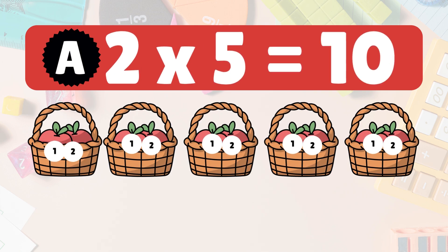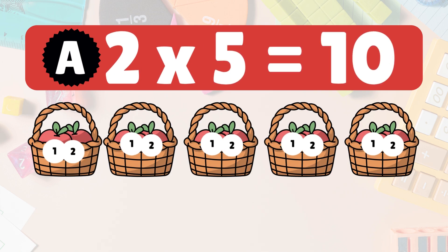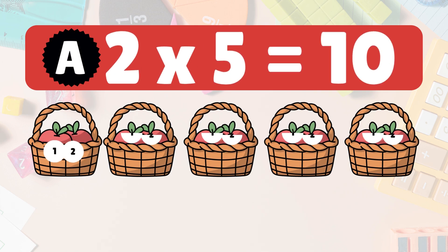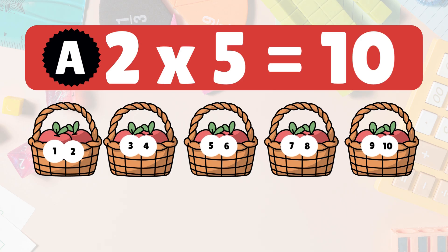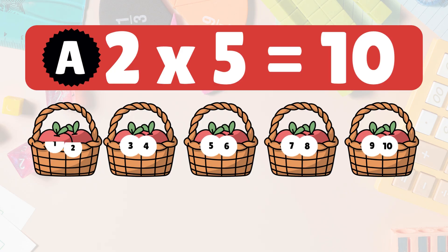Next, 2 times 5 is what? 2 times 5 is 10. Here we have 5 groups of 2 apples each. Let's count them all: 1, 2, 3, 4, 5, 6, 7, 8, 9, 10. So 2 times 5 is 10 apples.